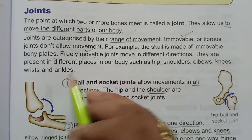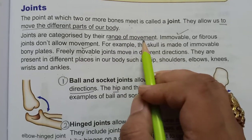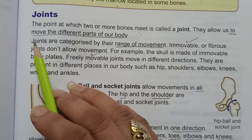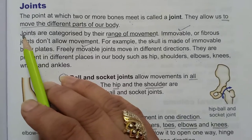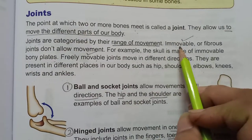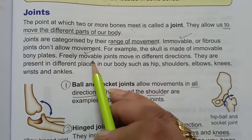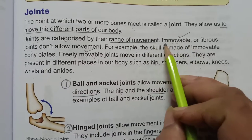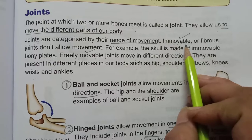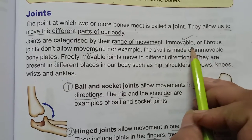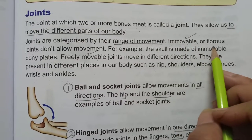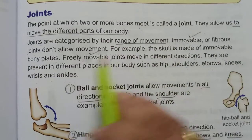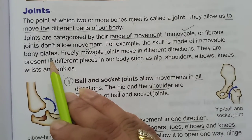According to the range of movement — whether they are movable or not — joints are categorized into two types: immovable and freely movable. Immovable joints, as the name suggests, don't allow movement. These are also known as fibrous joints. For example, the skull is made up of immovable bony plates.